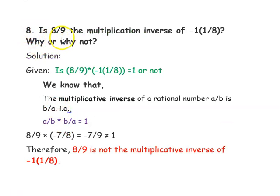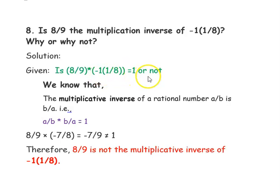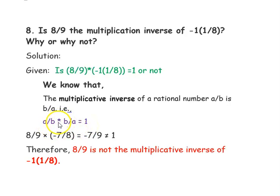The next question is: is 8/9 the multiplicative inverse of -1⅛? Why or why not? We will check whether 8/9 × (-1⅛) equals 1 or not. We know that the multiplicative inverse of a rational number a/b is b/a — that is, if you multiply the number and its multiplicative inverse, you should get the result as 1.